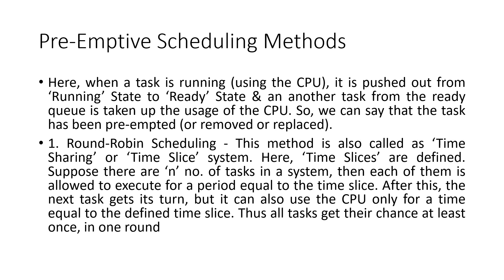We have seen the non-preemptive scheduling methods: FCFS and Shortest Job First. Next, for preemptive scheduling, an already-running task is pushed from the running state to the ready state and another task is taken up by the CPU. There are two scheduling methods for preemptive mode. The first is Round Robin scheduling, also called time slice or time sharing. A certain time slice or time period is defined, and if there are n tasks, each is allowed to execute for a period equal to that time slice. After this, the next task gets its turn, ensuring all tasks get a chance at least once per round.